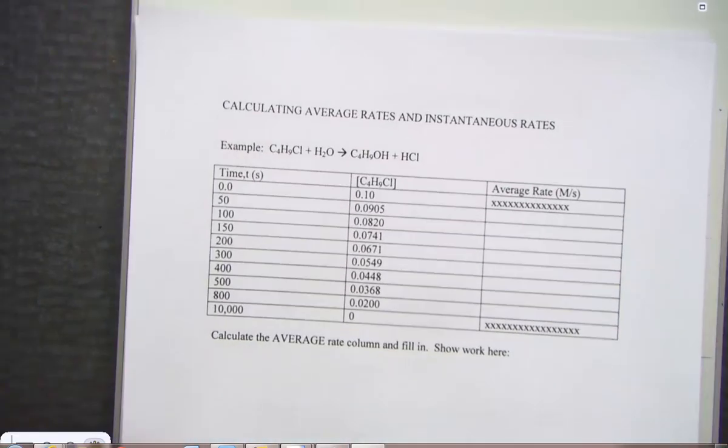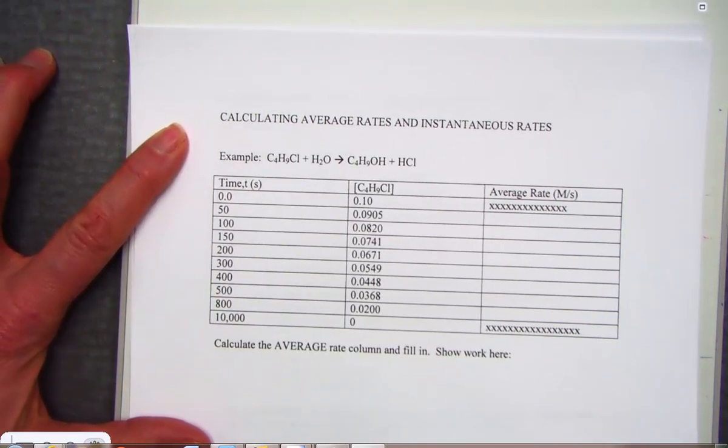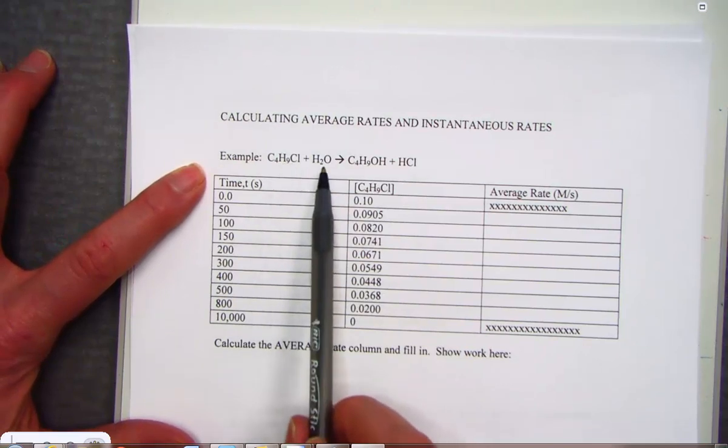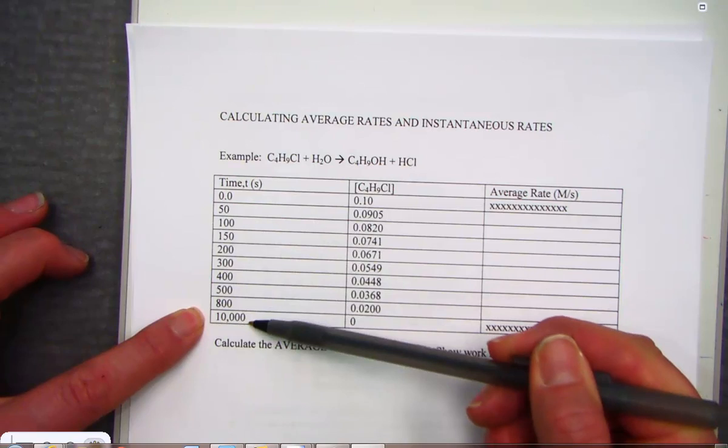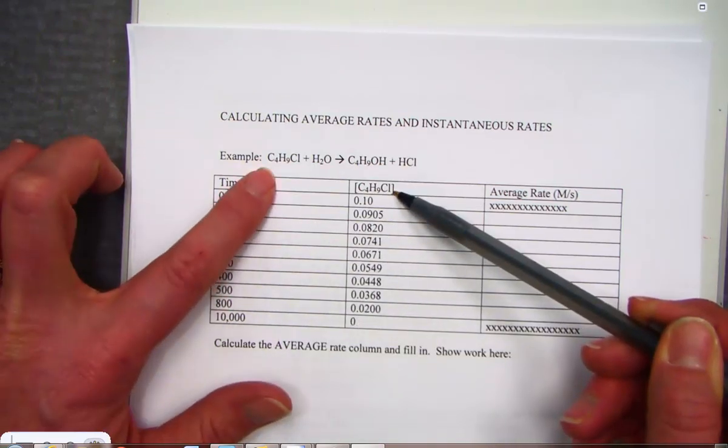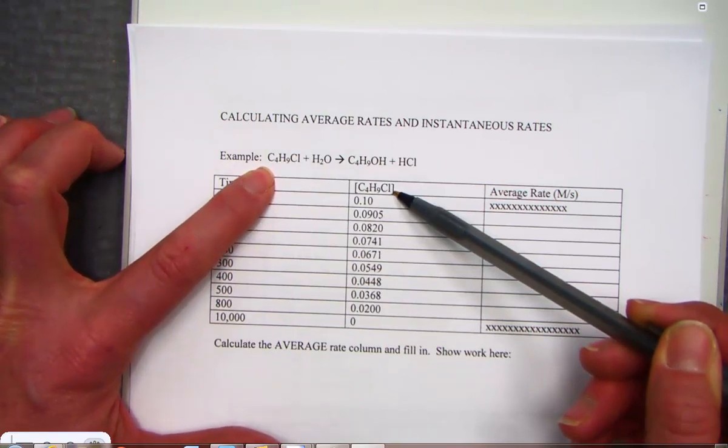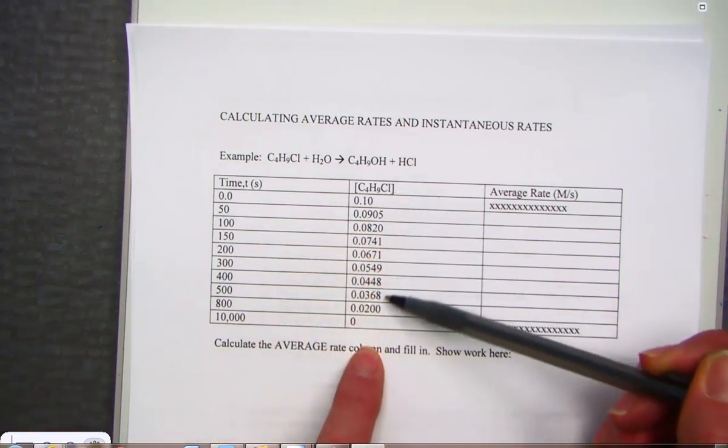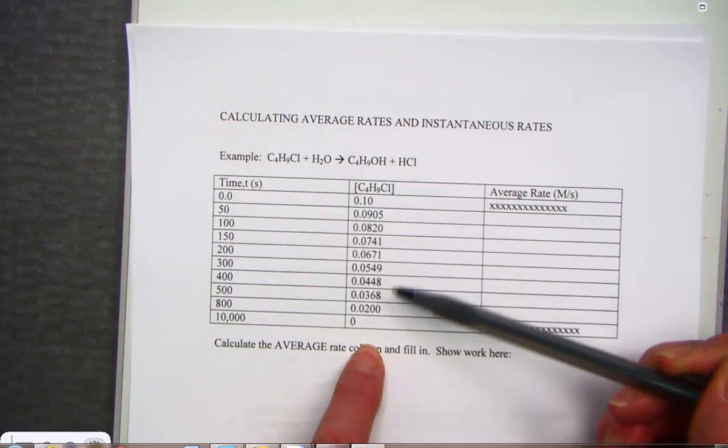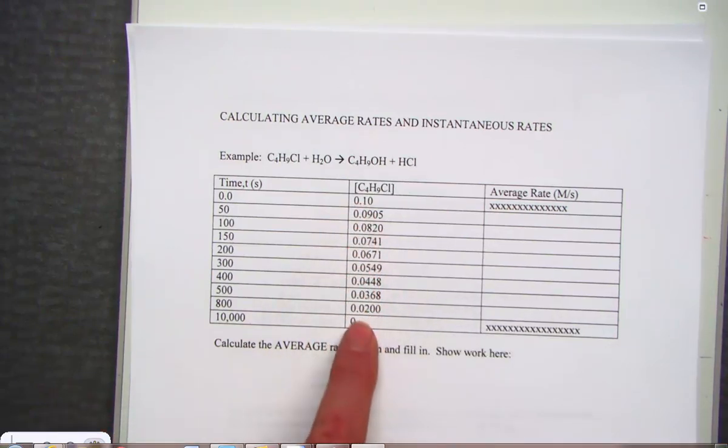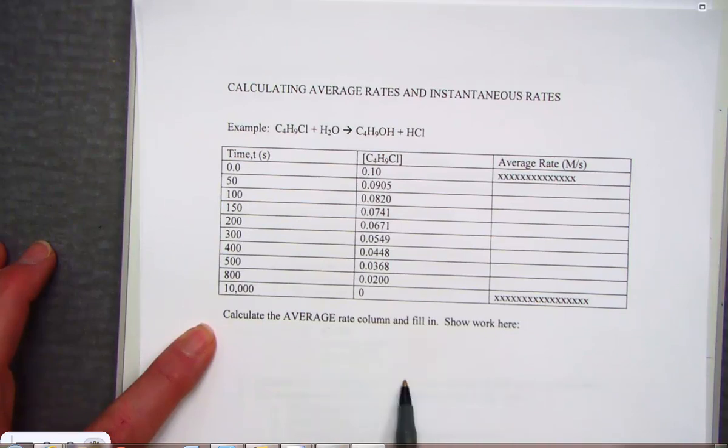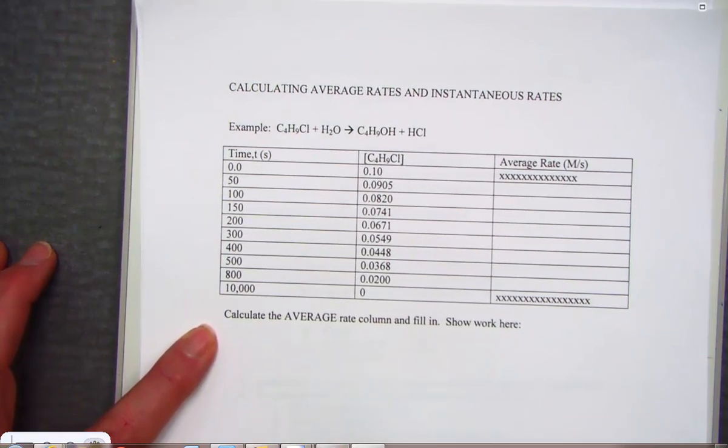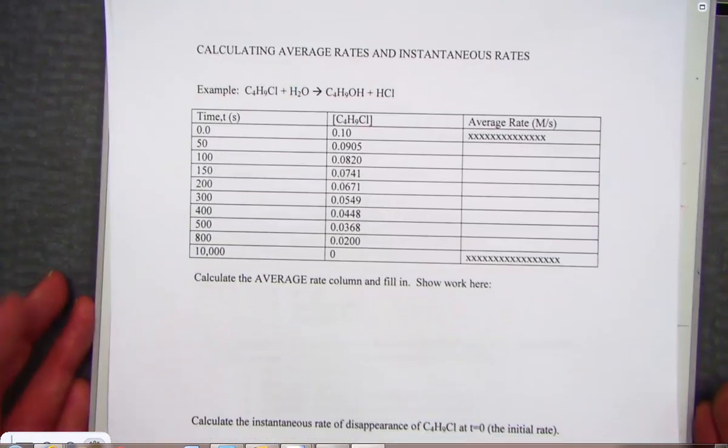Well let's take a look at this page as our model. We have a sample question that we can practice together. Here's a chart in which we have a hydrocarbon reacting with water going on to form products. What we notice is that in our first column we have time data starting at time zero and 10,000 seconds go by. Here is what we are measuring: the concentration of the reactant C4H9Cl. Notice that as time is going by the reactant's concentration is decreasing. Makes sense, reactants get used as products get made. So as time goes by we have measured the amount of reactant left.